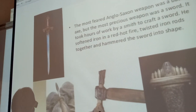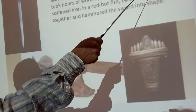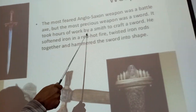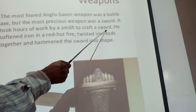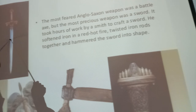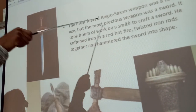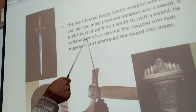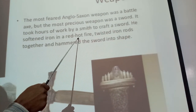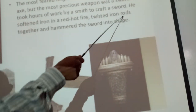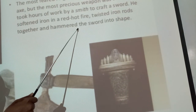It took hours of work by a smith to craft a sword. He softened iron in a red-hot fire, twisted rods together, and hammered them into shape.